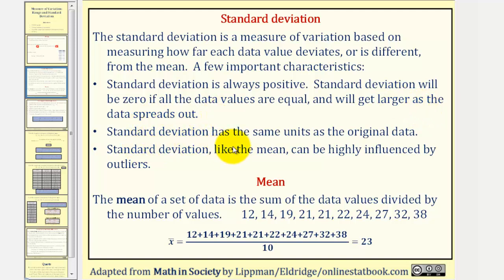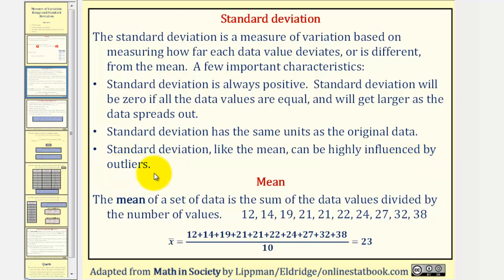Standard deviation has the same units as the original data. And standard deviation, like the mean, can be highly influenced by outliers — values that are very large or very small compared to the rest of the data.